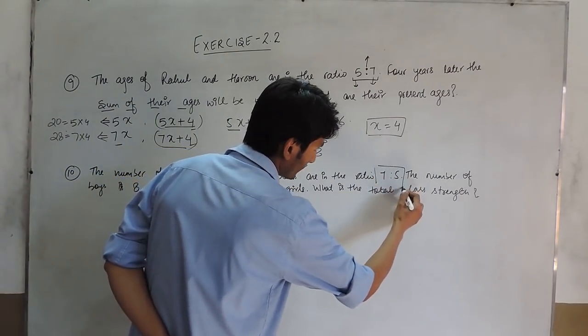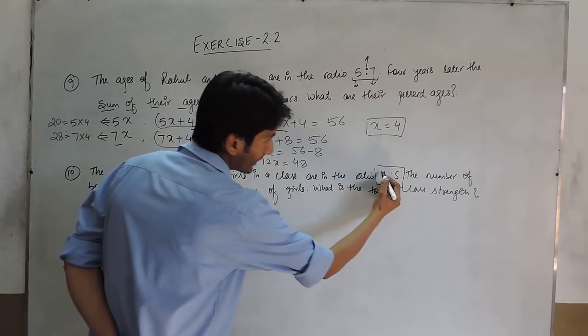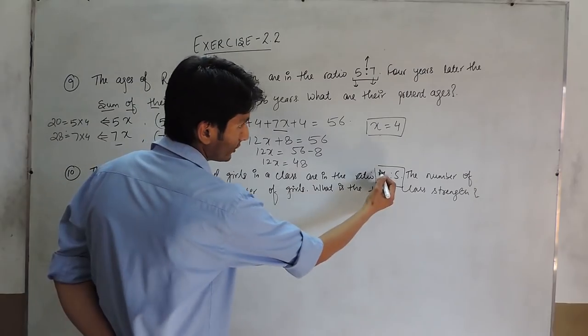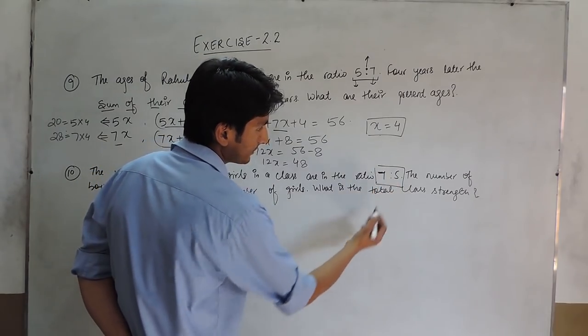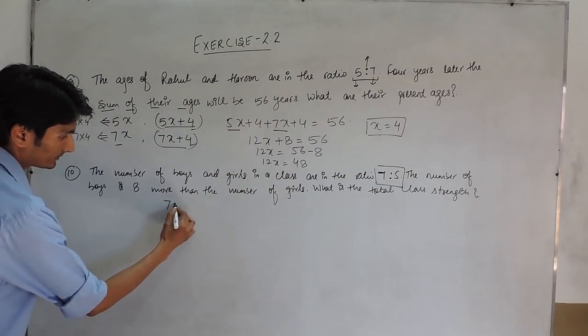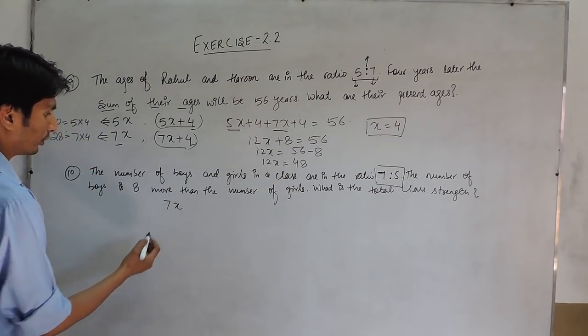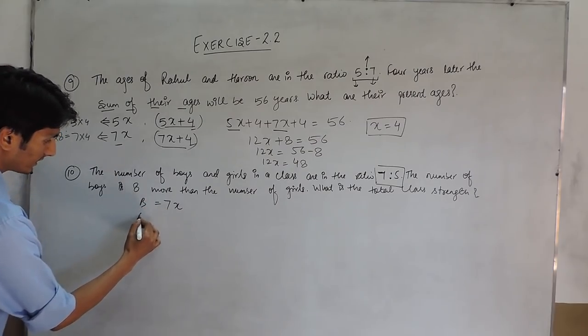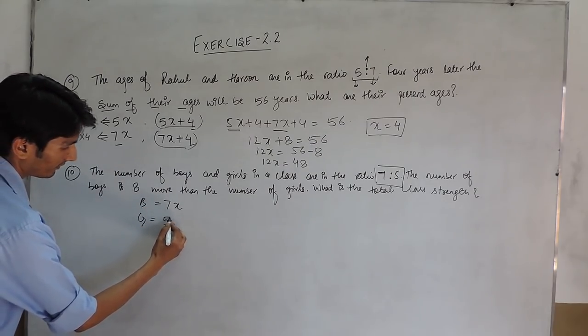Again, their numbers are in the ratio 7:5. If you have to find the exact number, you just have to remove the ratio sign and multiply this with a variable. So, the number of boys would be 7x and girls would be 5x.